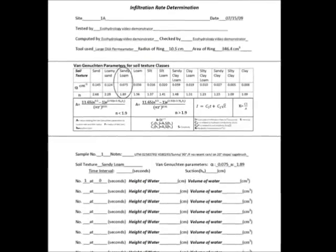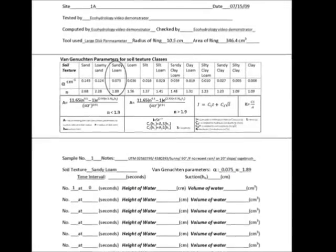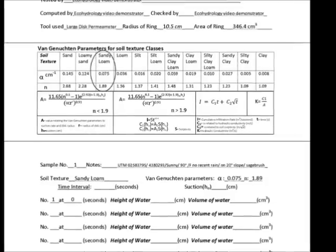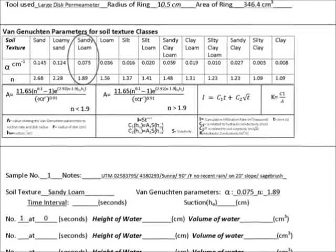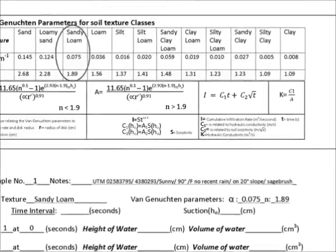Properly label the texture on the datasheet and choose the appropriate theta and n values for the soil texture. These constants will later be used for the infiltration rate and saturated hydraulic conductivity determination.